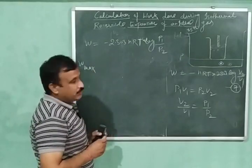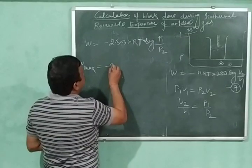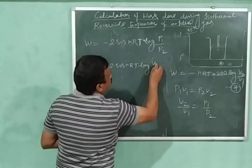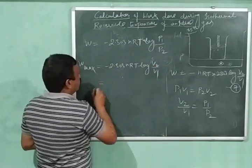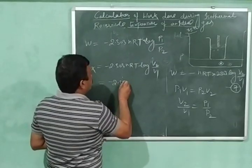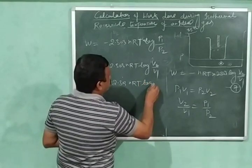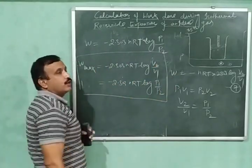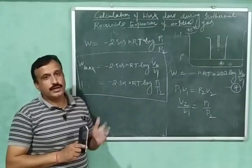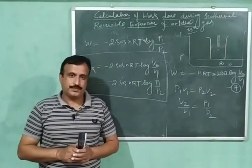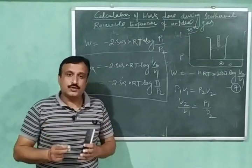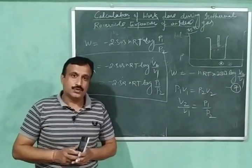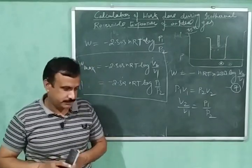So we can write w_maximum = −2.303 nRT log(v2/v1), which is also equal to −2.303 nRT log(p1/p2). These are the required expressions for work done during isothermal reversible expansion of an ideal gas. I hope you have enjoyed today's video. If you liked it, please like and share, and also subscribe to my channel. Thank you very much.